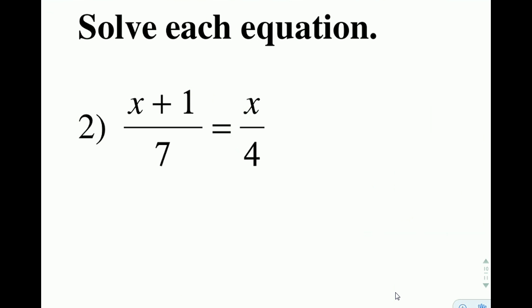So as we look at this problem here, I see a fraction on one side equal to a fraction on the other side. First thing I want to do is get myself a common denominator. And when I look at 7 and 4, I know that they both go into the number that they multiply to, which is 28.